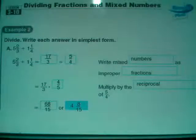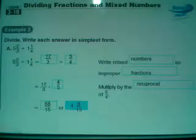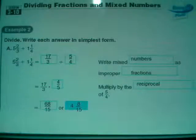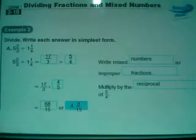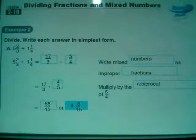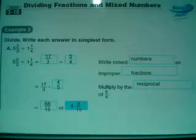Here are the questions that throw mixed numbers at us. Just like we had with the multiplication, same thing is going to be true with the division. We're not going to work with those mixed numbers - we're going to change them into improper fractions and then use the steps of division to solve from there. We've got 17 thirds divided by 5 fourths in this one.